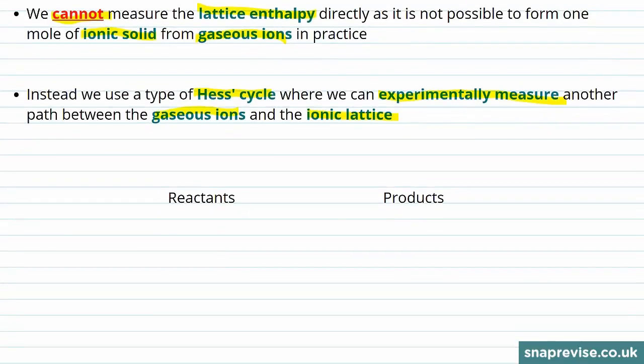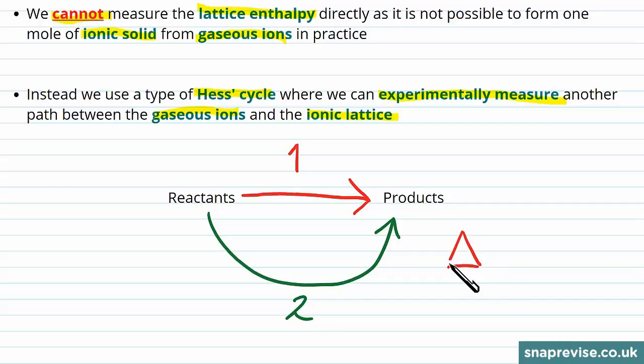So if you'll remember, with Hess's Law it states that if we go from reactants to products via one path which we'll call path 1, but we can go from the same start point to the same end point via a different route which we'll call path 2, then the enthalpy change along each of these paths is equal to each other.